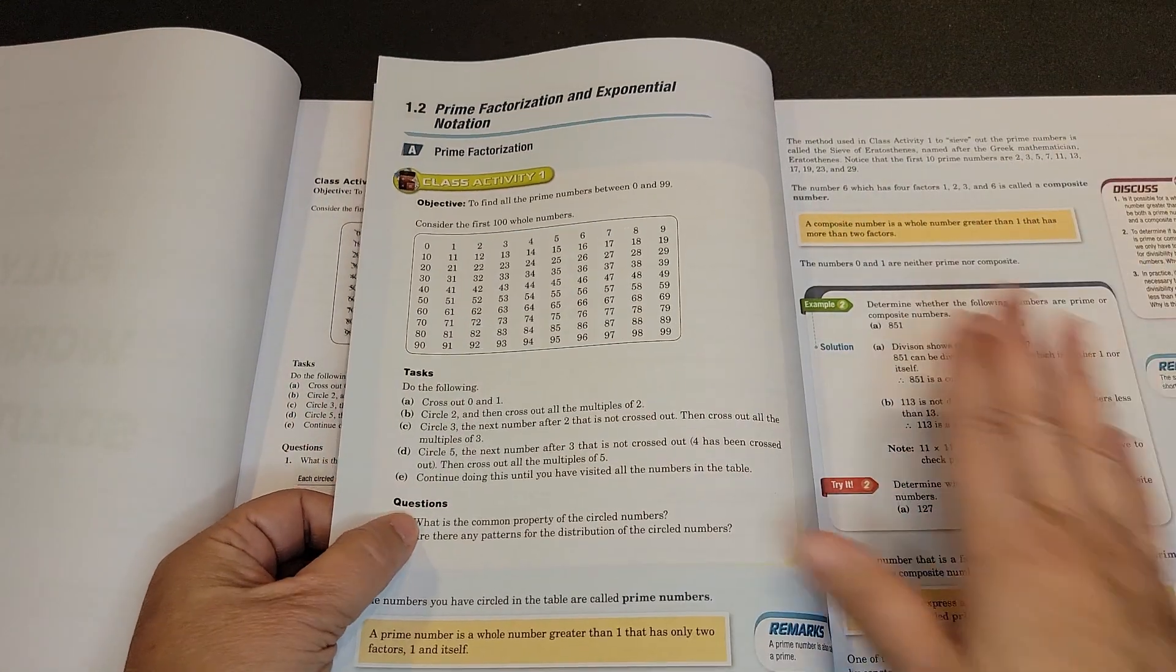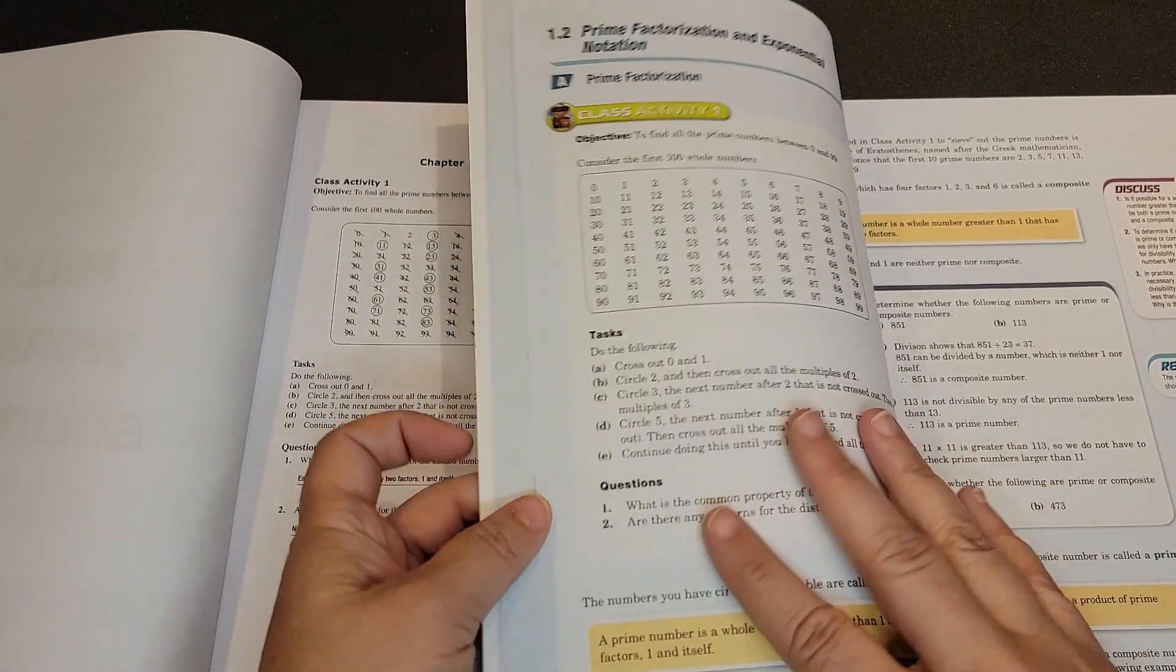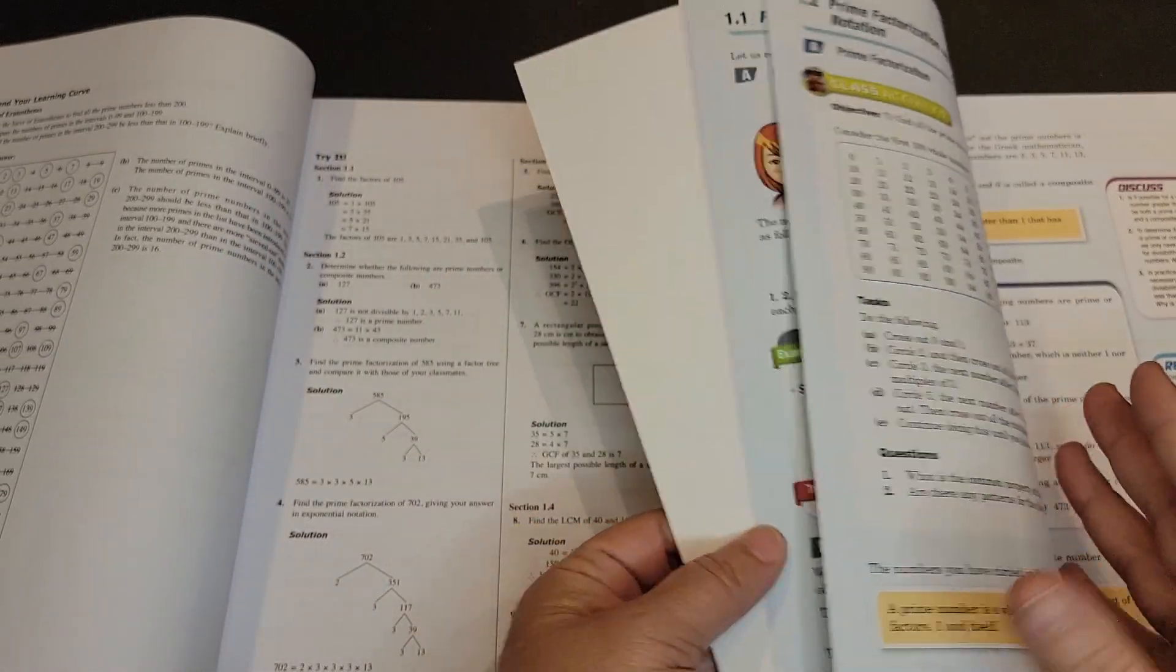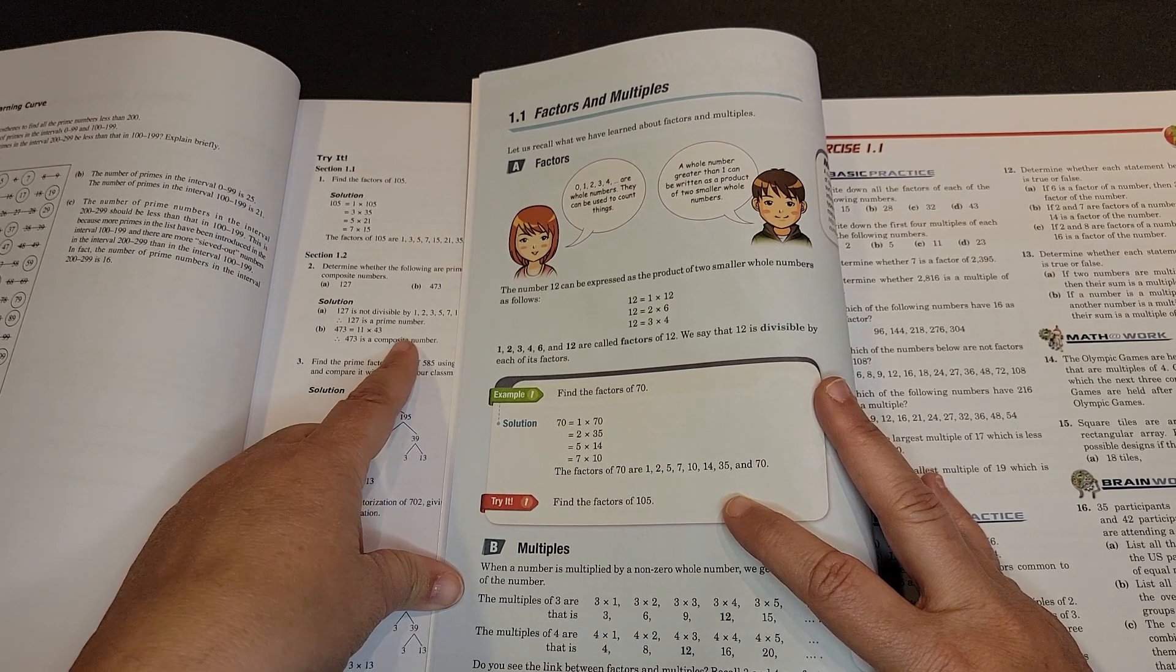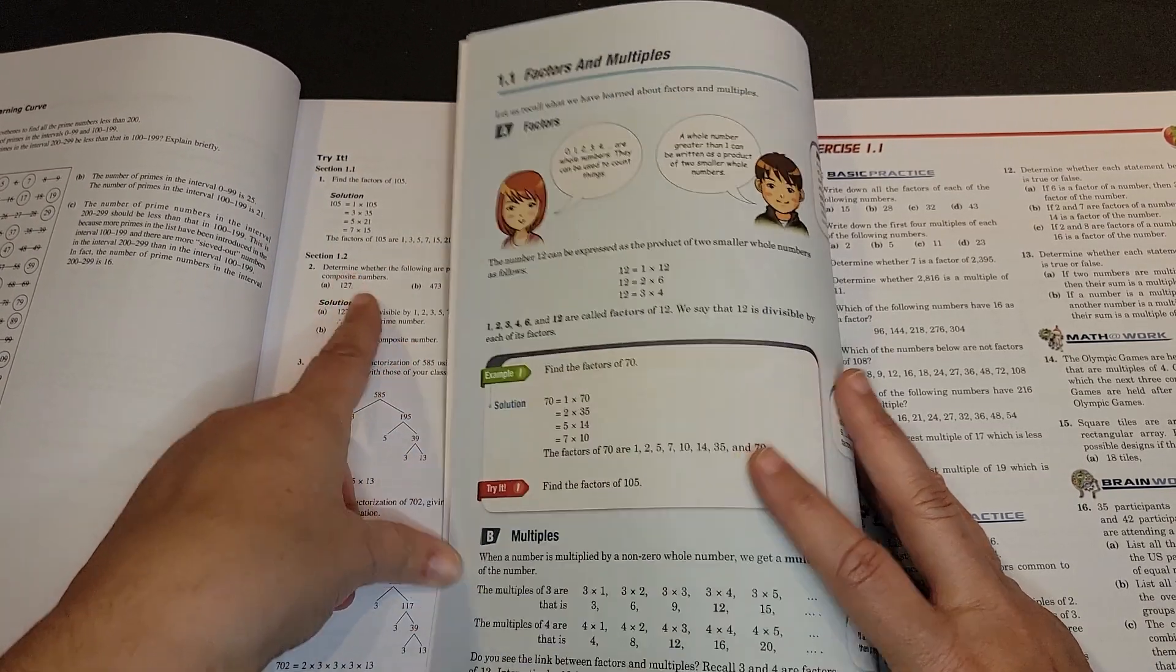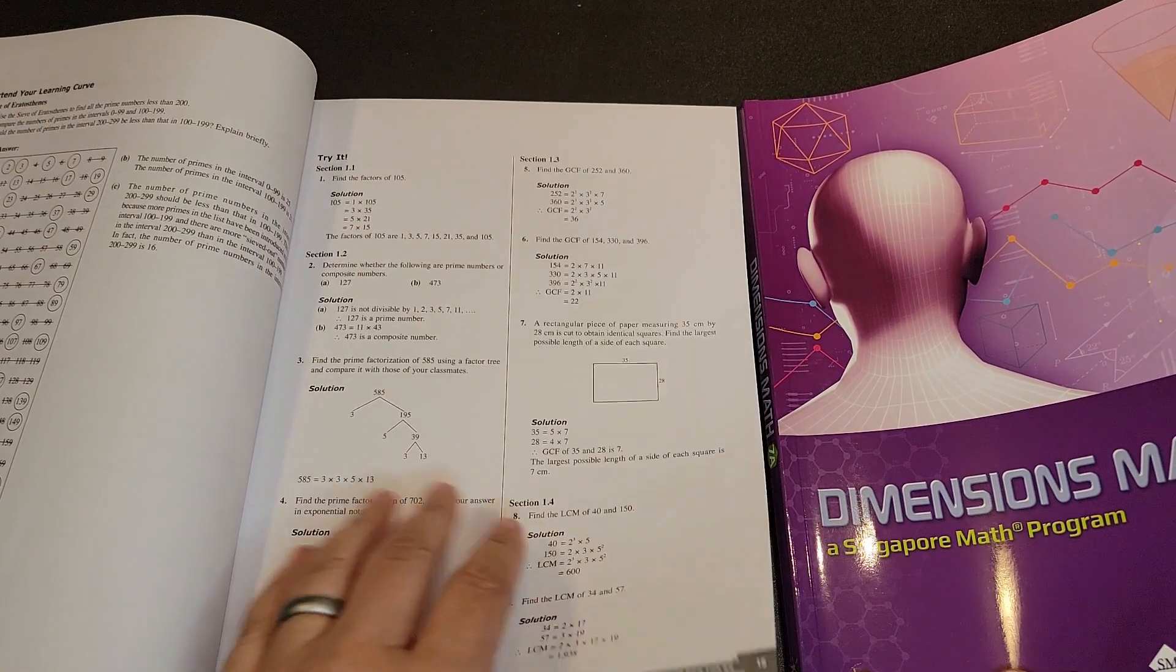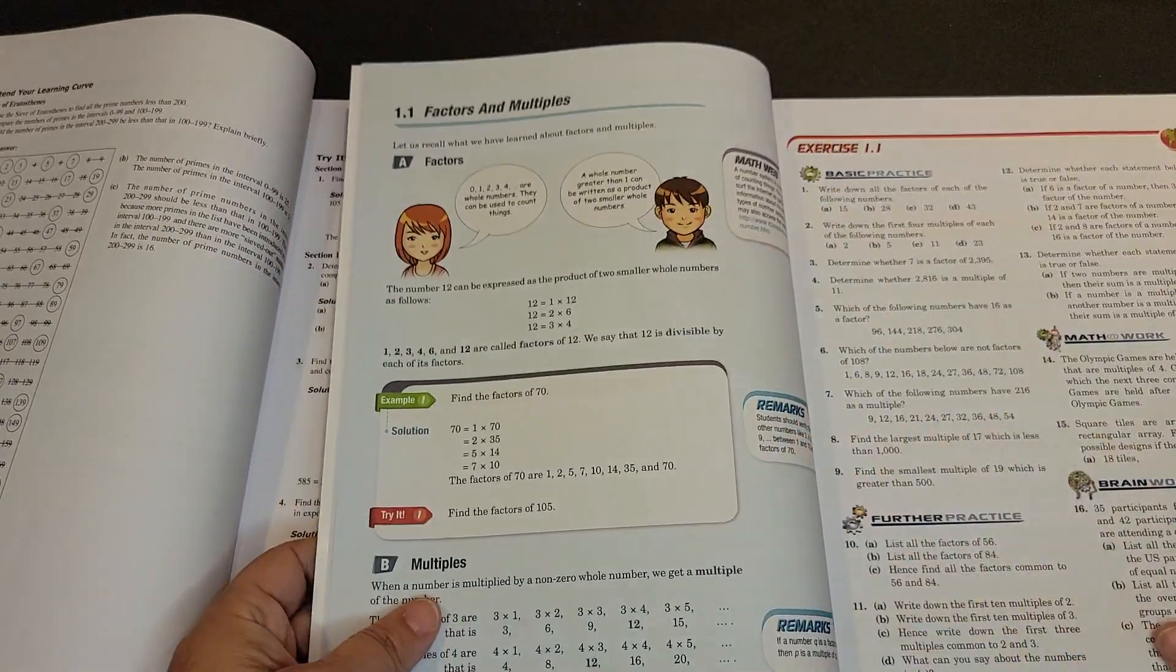So your class activity is here, right? So then you will see that here's your answers for your class activity. Then you have to go back. Now you can see you go back and you have your section one, try it. So that makes sense, right? So then you're at section one, try it. But then it goes through all of your try-its for the entire chapter.